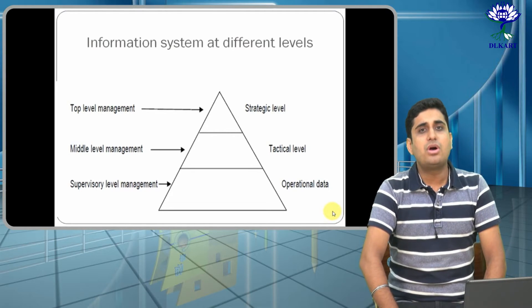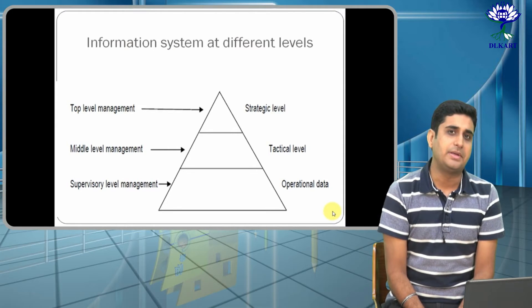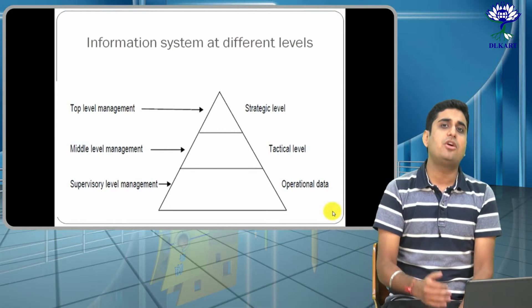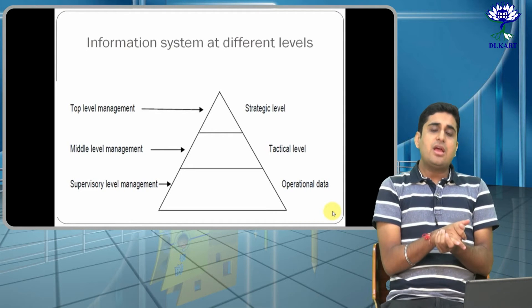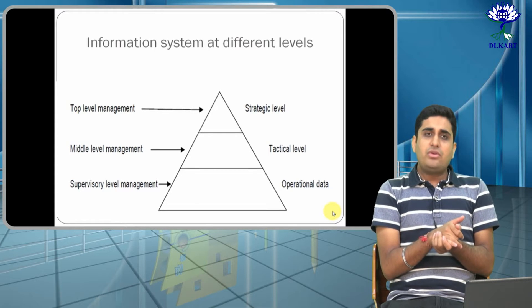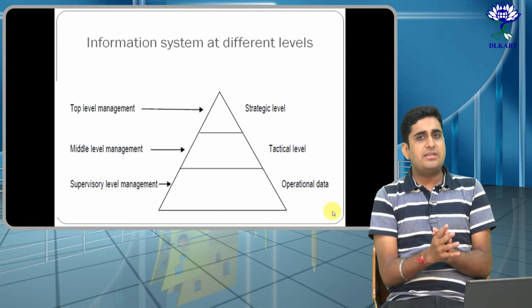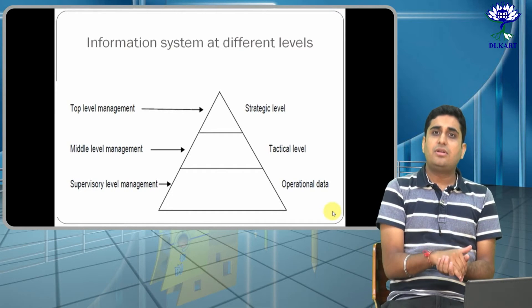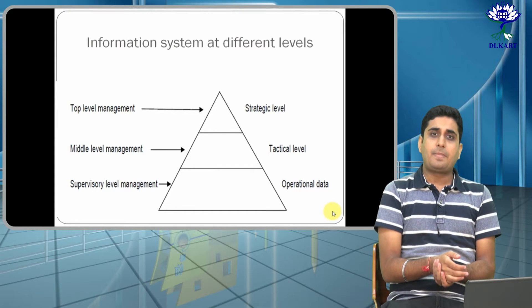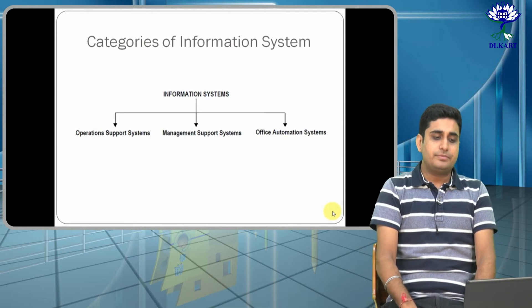Then you have supervisory level management, where you will find people who are actually working on the operations of the company — they deal with daily operational data. The reason information systems are divided into these three levels is that whenever you have to make decisions or plan your company's information system, it can be done across these three levels: top level, middle level, and supervisory level.